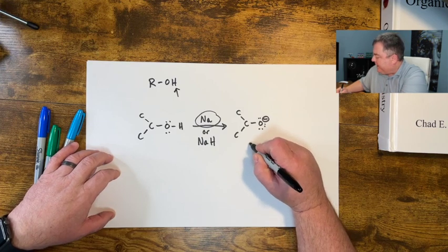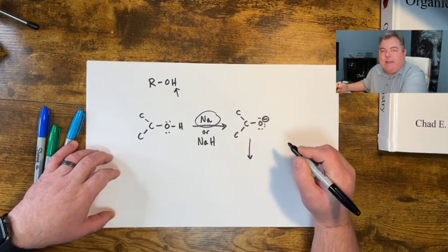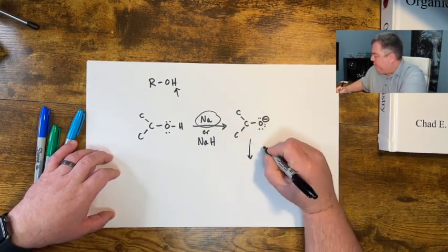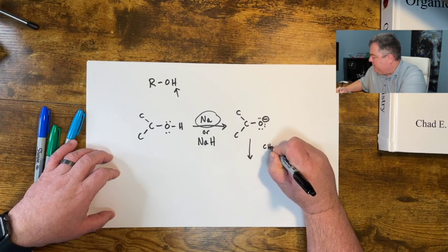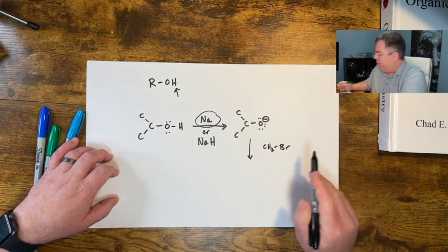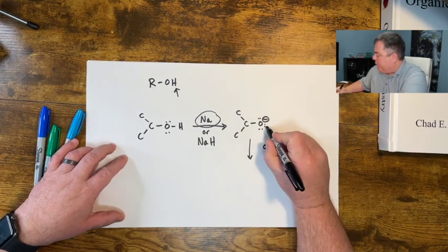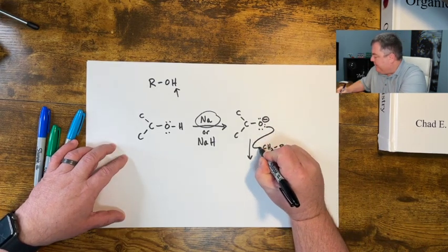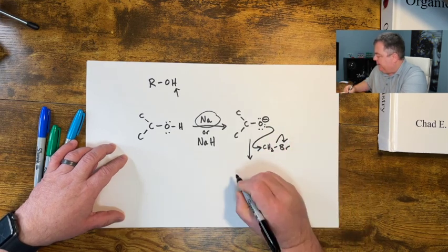So I could take this alkoxide, I can then in the beaker put another molecule. Let's put methyl bromide, something with a good leaving group. The O minus wants to come attack, it can backside attack. My leaving group can leave.